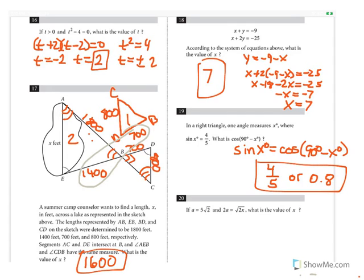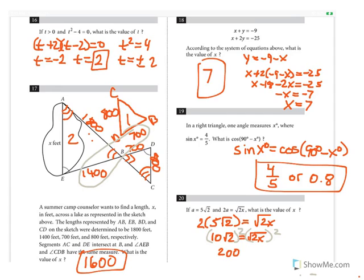Free response Question 20: If A equals 5 times the square root of 2, and 2A equals the square root of 2x, what is the value of x? Substitute A: 2 times 5√2 equals √(2x), giving 10√2 equals √(2x). Square both sides: 100 times 2 equals 2x, so 200 equals 2x, meaning x equals 100.